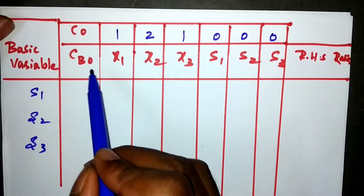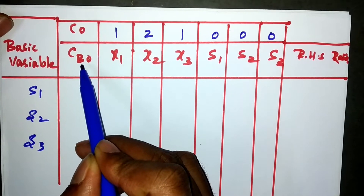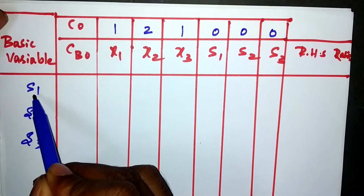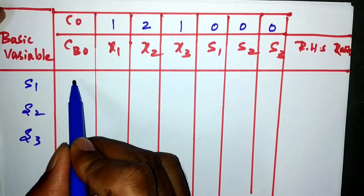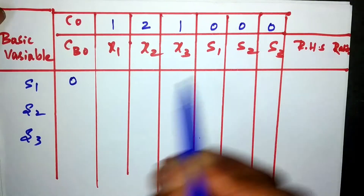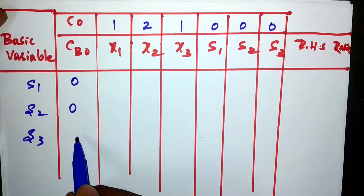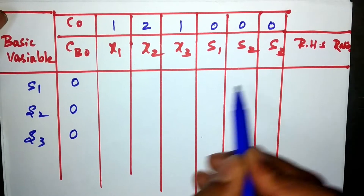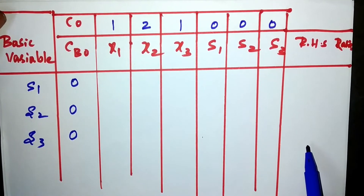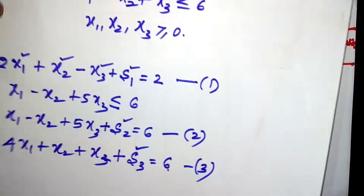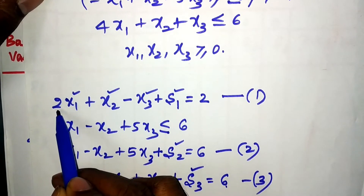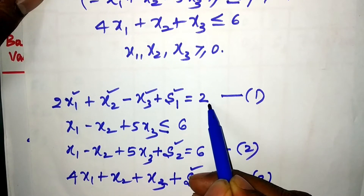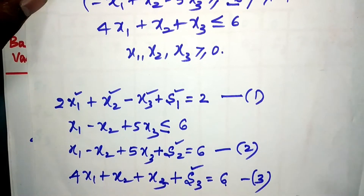CB0 means the coefficient of each basic variable in the objective function: s1 in the objective function is 0, s2 is 0, s3 is 0. Now we write the first constraint in the first row — only coefficients. The first constraint gives x1=2, x2=1, x3=minus 1, s1=1, and RHS=2.